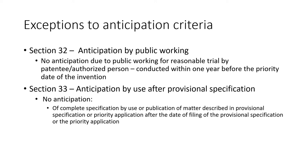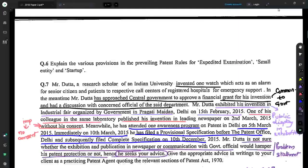Section 33 provides exceptions to anticipation by use of the invention after you file the provisional application. If you use the invention after filing the provisional application, it won't be considered anticipation for any complete specification filed at a later stage for that same provisional application.